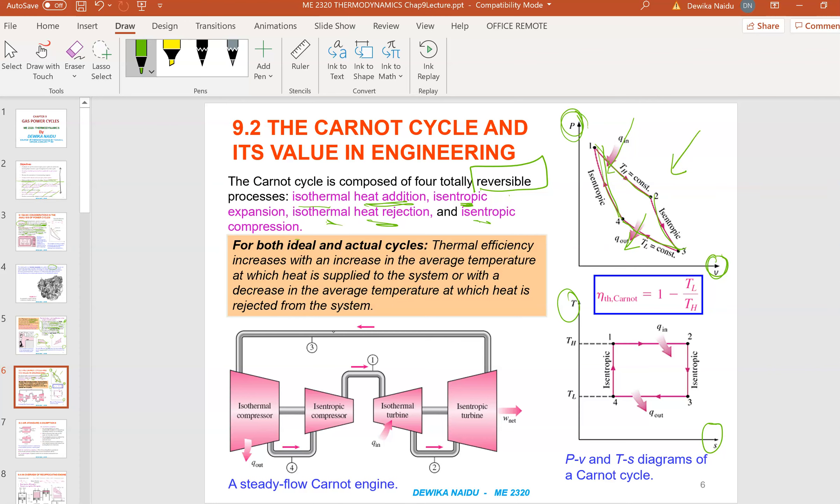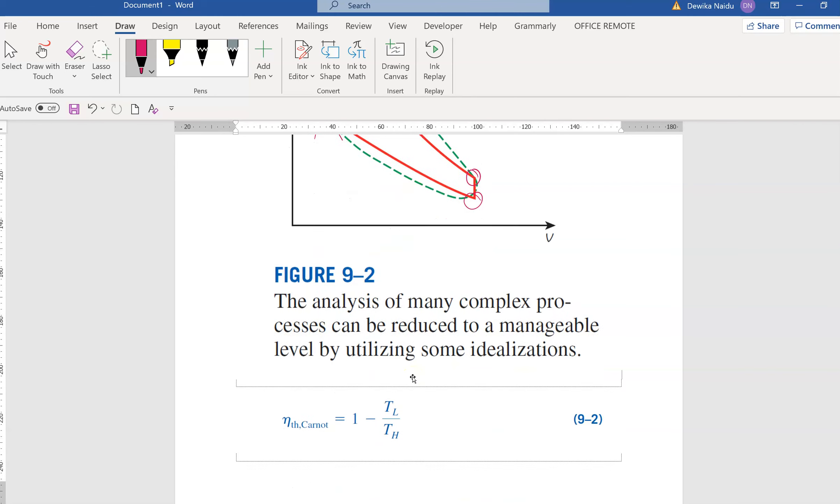The same scenario plotted on TS diagram will look something like this. Isentropic. Can you see? The entropy is constant. And then we have isothermal. The temperature is constant. It's actually the same scenario, but it's being plotted in two different graphs. This will be the arrangement for these plots. This is an isothermal compressor where heat is going out and an isothermal turbine. The Q is going in. This is a steady flow Carnot engine, an example of a steady flow Carnot engine.